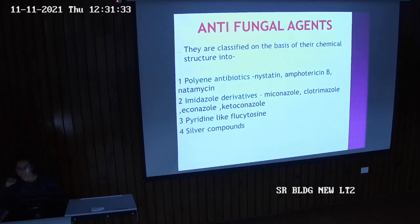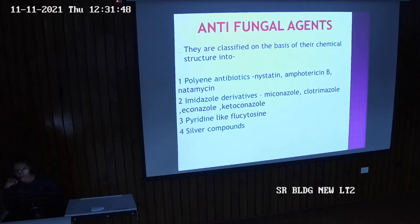Then antifungal agents. They are classified on the basis of their chemical structure into: first, polyene antibiotics — these are nystatin, amphotericin B, and natamycin. Then imidazole derivatives — miconazole, clotrimazole, econazole, and ketoconazole. Then pyrimidine-like flucytosine and silver compounds.